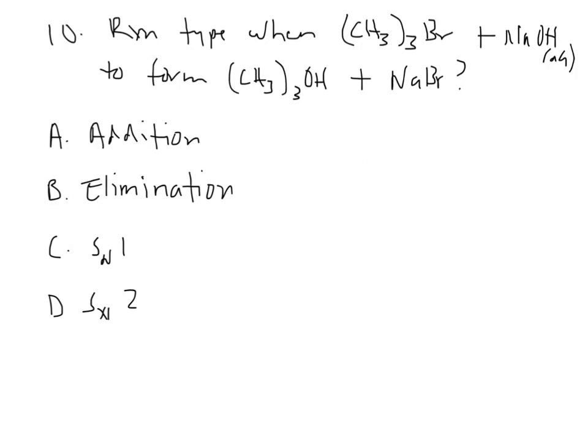Number ten, what's the reaction type when CH3, 3, BR, and NaOH form? So this is, what you're supposed to recognize is this is a tertiary halogeno alkane. And so because it's tertiary, because of the steric hindrance or these three methyl groups on there, this is going to undergo the SN1 mechanism. The BR is going to have to break off before the OH can move in. So that would be C.